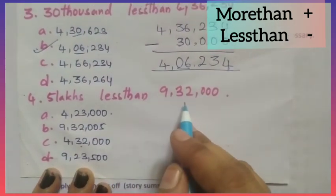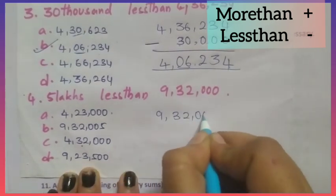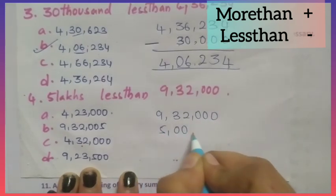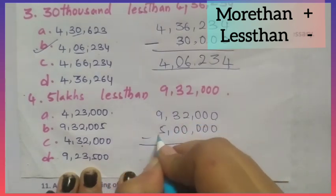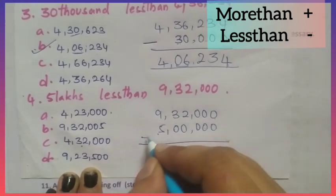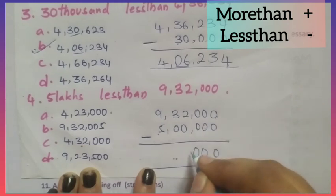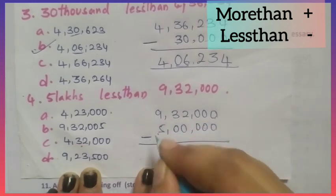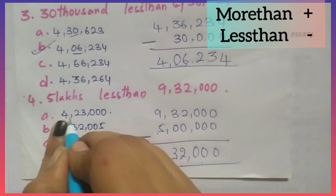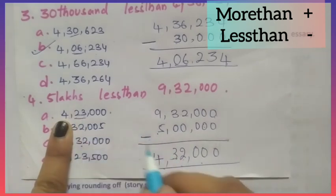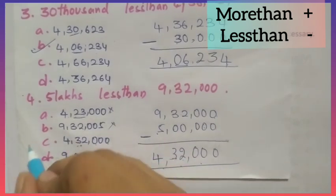Next: 5,00,000 less than 9,00,32,000. Write the number and subtract 5,00,000. 0−0=0, 0−0=0, 0−0=0, 2−0=2, 3−0=3, 9−5=4. The answer is 4,00,32,000. Check the options — 4,00,32,000 is correct.